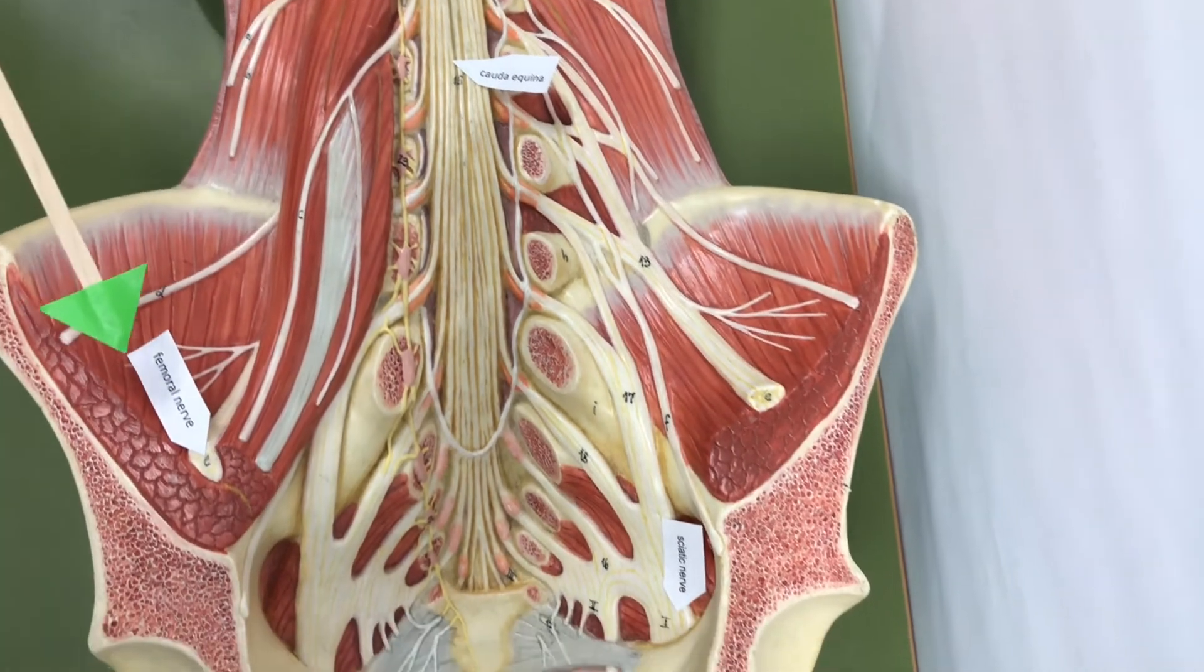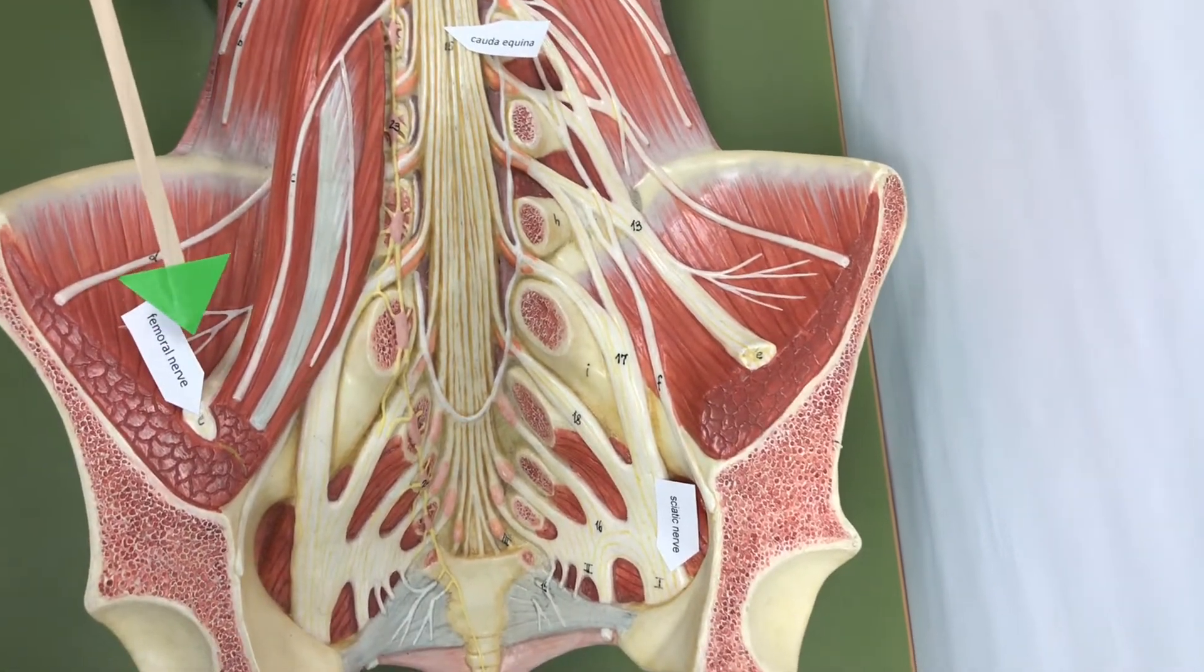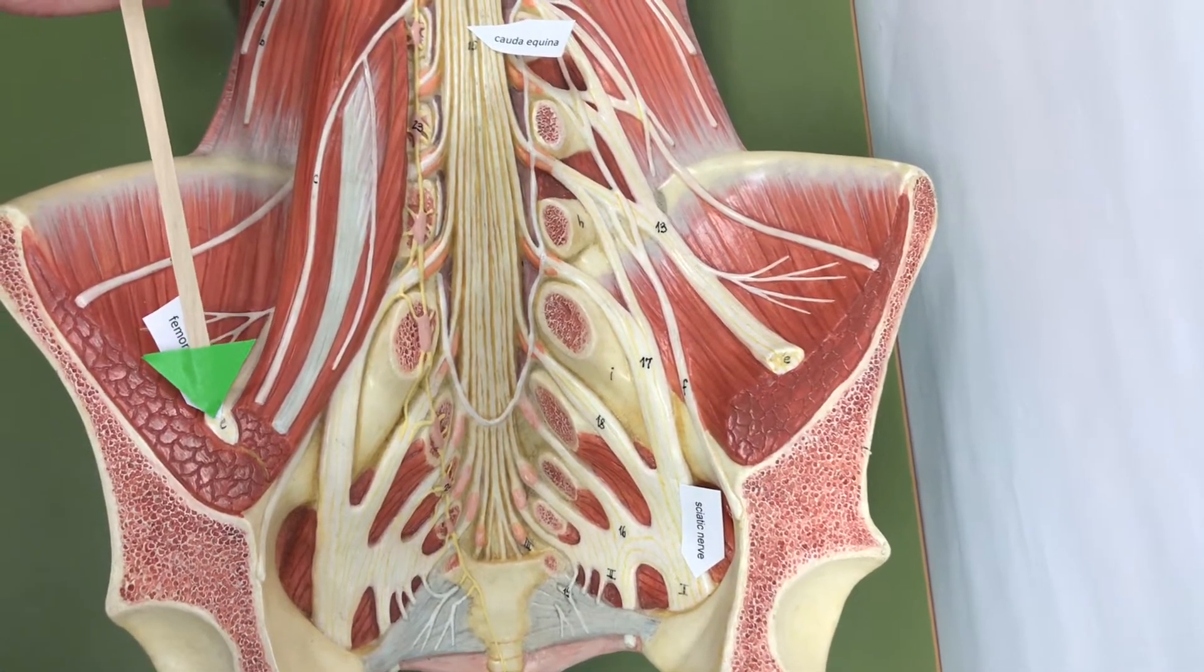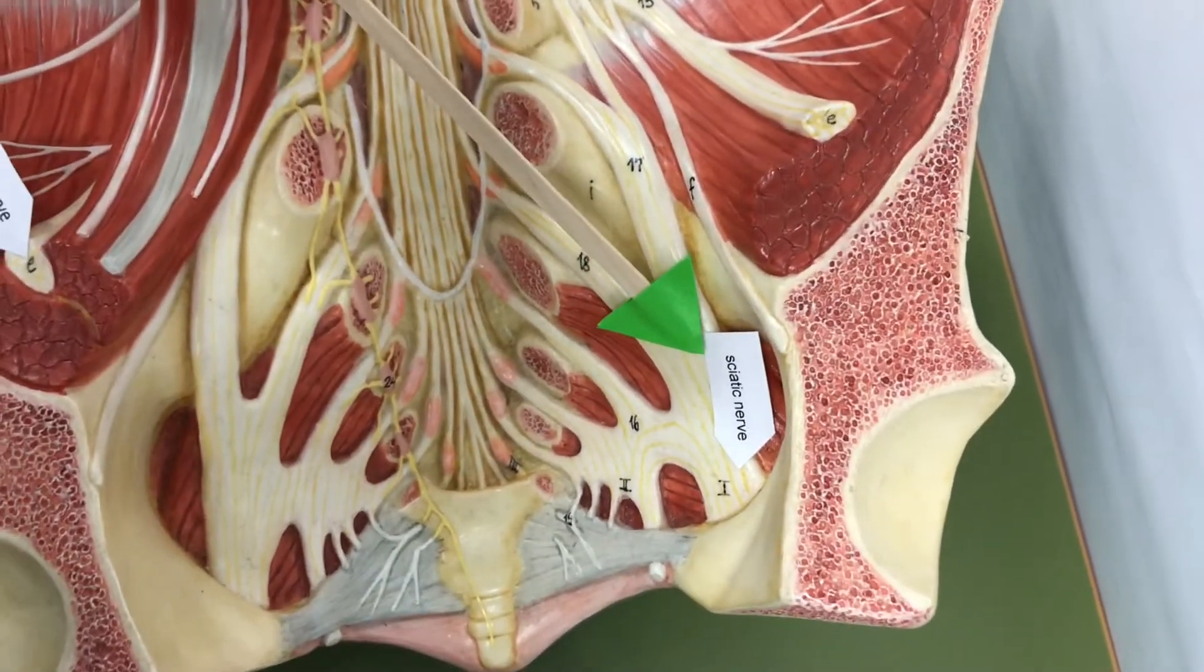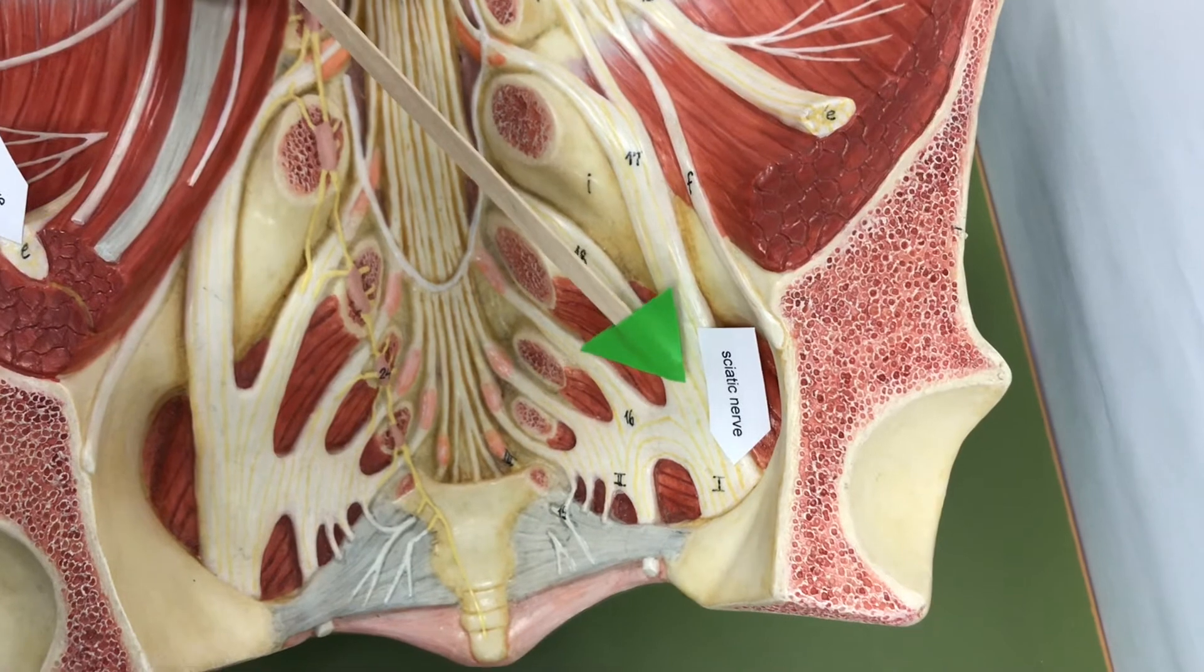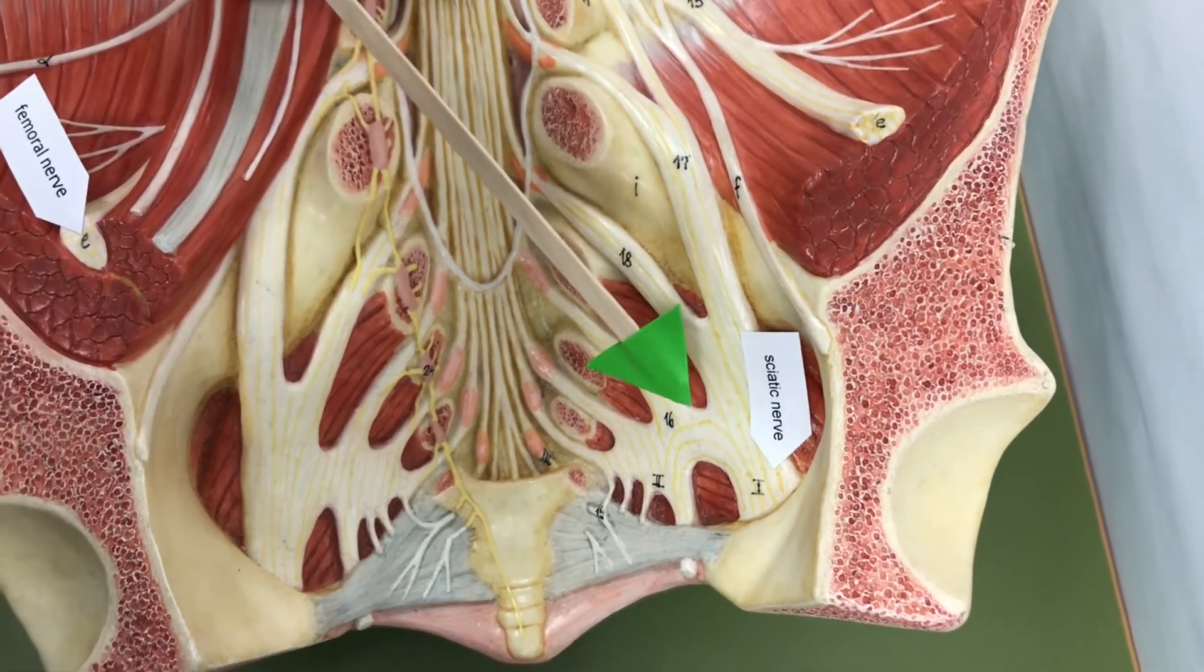We have some major nerves in the pelvic region. This is the femoral nerve, which goes down to the leg, and we have the sciatic nerve that goes through the greater sciatic notch of the coxal bone.